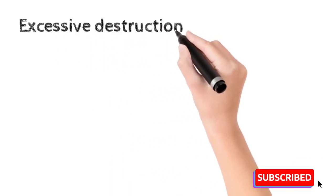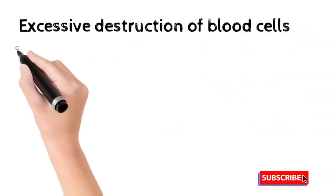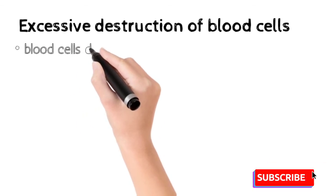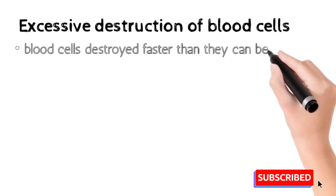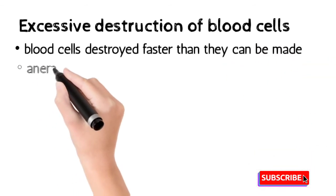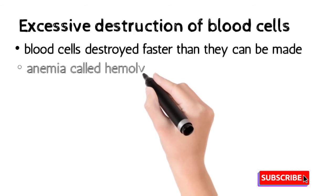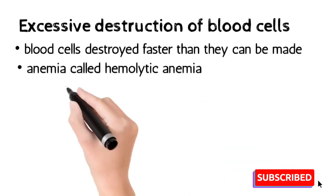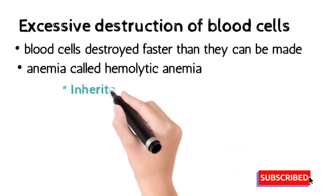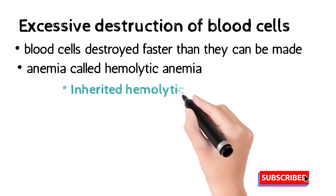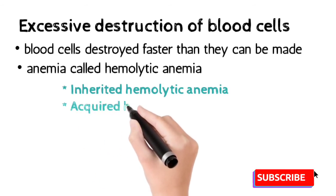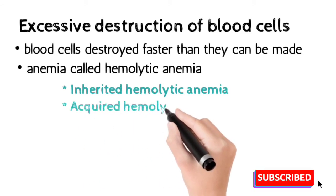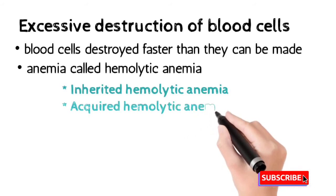The third type is excessive destruction of blood cells or RBCs. In this condition, blood cells are destroyed at a faster rate compared to their production. This type of anemia is called hemolytic anemia. It has two further classifications: number one is inherited hemolytic anemia, which passes from parents to their children, and number two is acquired hemolytic anemia, which is due to external factors or environmental conditions.